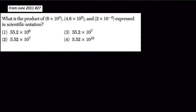So here we're multiplying three numbers in scientific notation. We have 6 times 10 to the third, 4.6 times 10 to the fifth, and 2 times 10 to the negative second.